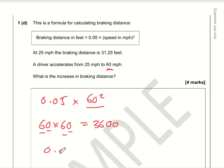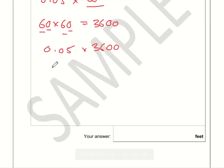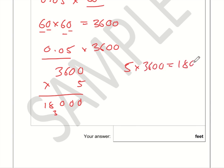So 3600. So 0.05 times by 3600. If you recognize that 0.05 is 5%, then you could work out 10% and then half it, or just do 3600 times by 5. Ignore the fact that it's a decimal. Five times 3600 is 18,000.